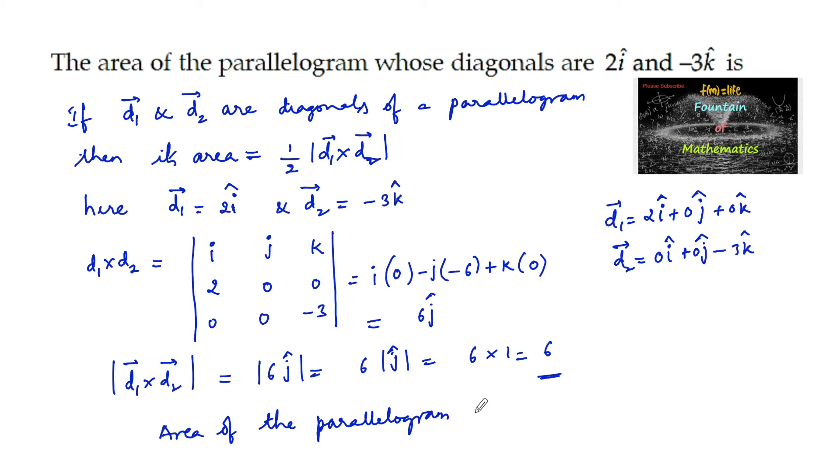is 1 by 2 times mod d1 cross d2, which equals 1 by 2 into 6, that is 3 units, and 3 square units is the area.